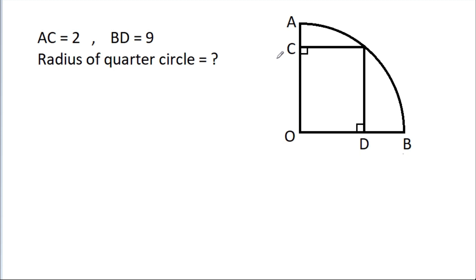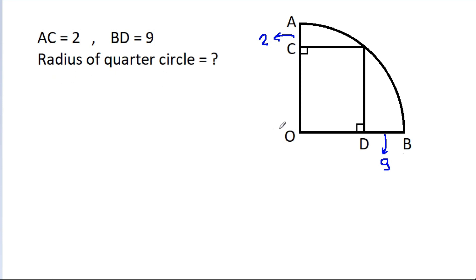In this video, we have given that AC is equal to 2 and BD is equal to 9. Then we have to find the radius of the quarter circle.